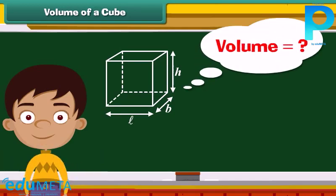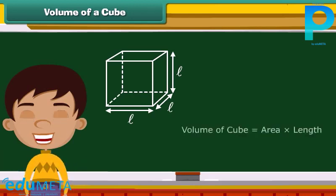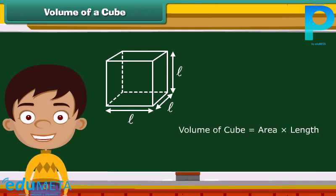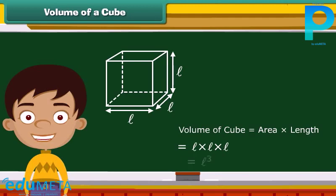First, consider this square with each side length L. Next, let's change this square into a cube. Note that all the sides of a cube have the same length L. To find the volume of the cube, we just need to multiply the area A with L. Hence, by multiplying these three L's together, we get L cubed. Therefore, the formula for the volume of a cube is L cubed.